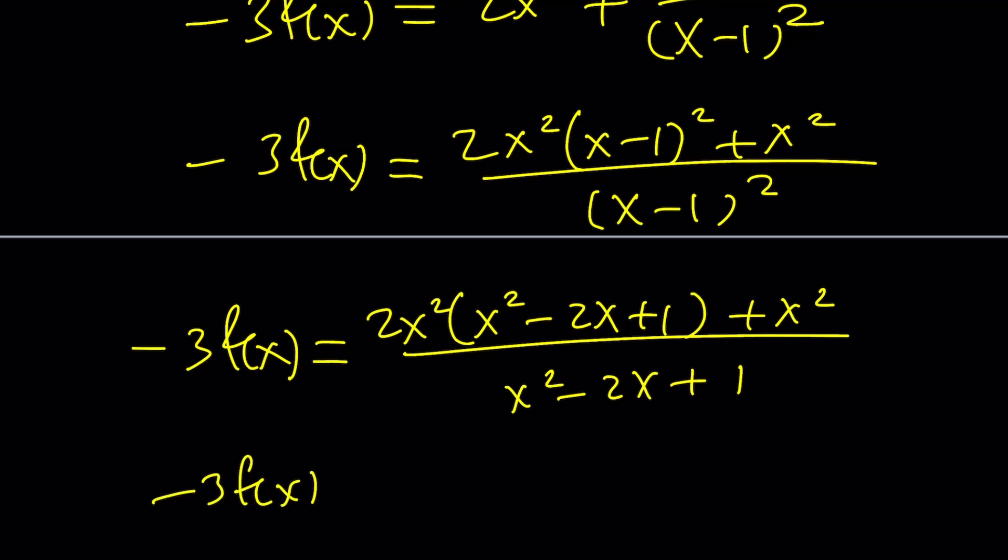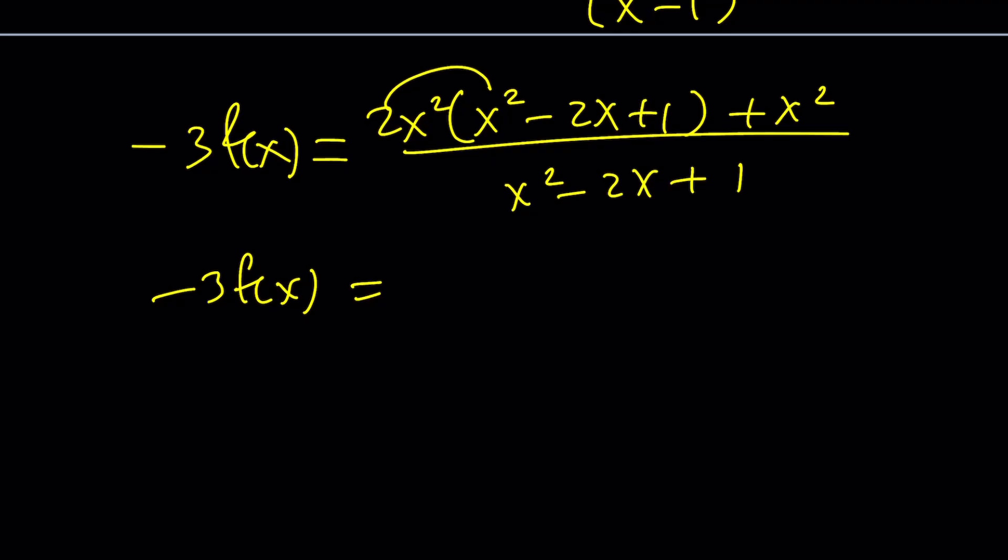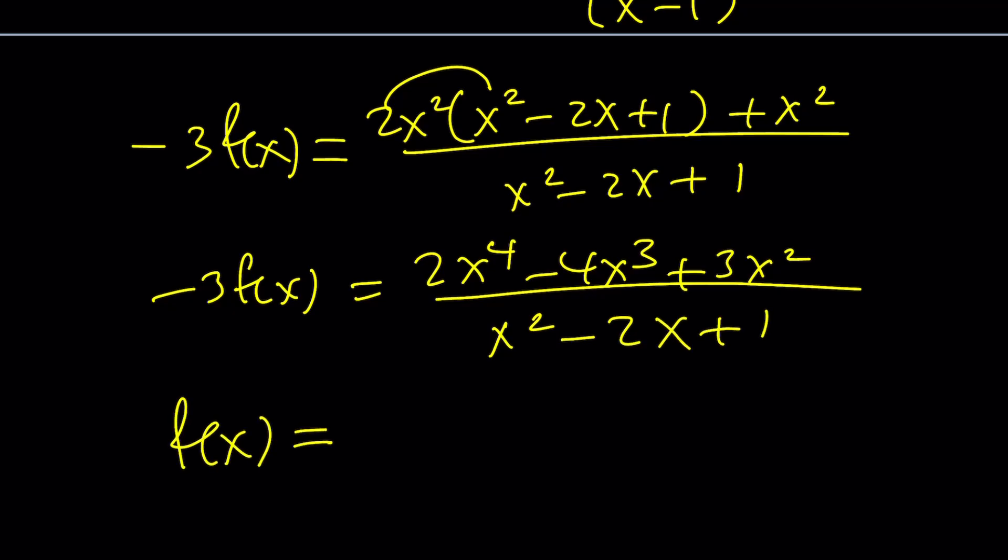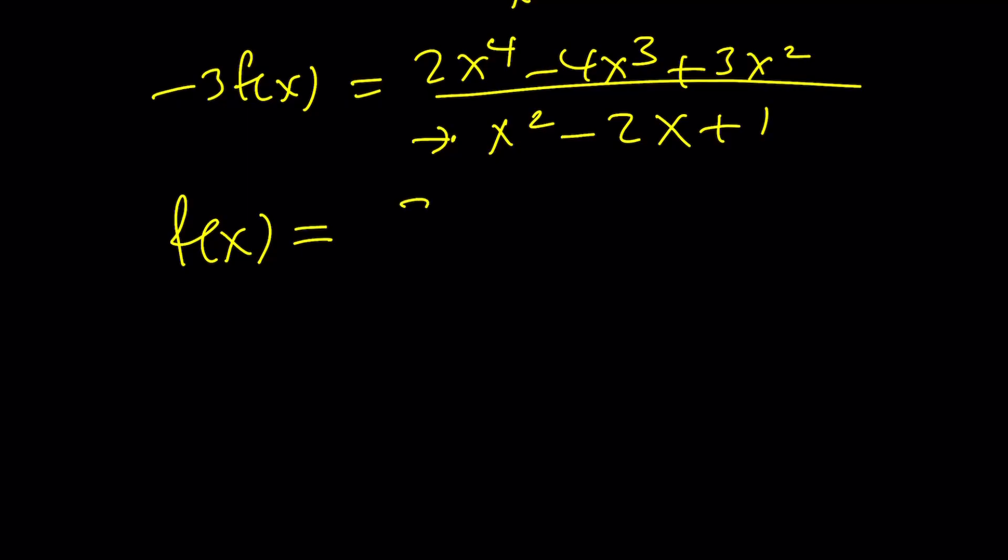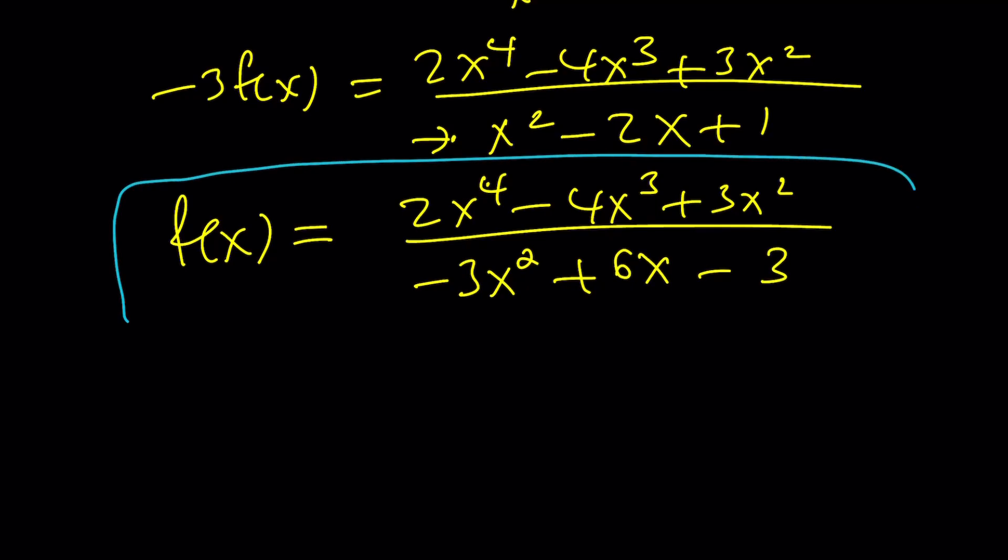So, at the end, I can get a simple version or form. This is going to be 2 x to the 4th minus 4 x cubed plus 2 x squared plus x squared is going to give you plus 3 x squared divided by x squared minus 2 x plus 1. Almost there. All we have to do now is divide both sides by negative 3. And it's basically going to go as a factor here. So, f of x is going to look like this. The numerator is going to stay the same. And the denominator, everything will be multiplied by negative 3, negative 3 x squared plus 6 x minus 3. And this should be the solution. If you don't trust that solution, go ahead and plug it into the original equation. And you should see that it satisfies.